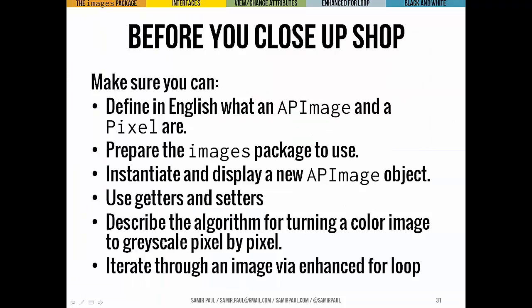A couple of things to know before you close up: you want to be able to define in English what an APImage and a Pixel are — their structure, pieces, and meaning. You want to prepare the Images Package to use it on problem set 5. You want to be able to instantiate and display a new APImage taking width and height as arguments, use getters and setters, explain what a getter, setter, and constructor are, describe the algorithm for turning a color image to grayscale pixel by pixel in Java, and iterate through an image using an enhanced for loop, especially to convert an image to black and white.